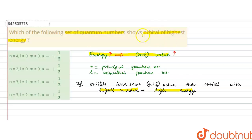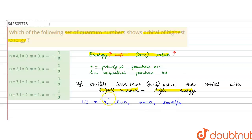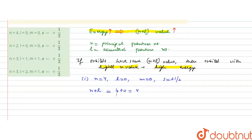When finding the orbital with the highest energy, for the first option (option A): n=4, l=0, m=0, s=+1/2. The n plus l value is 4 plus 0, which equals 4.